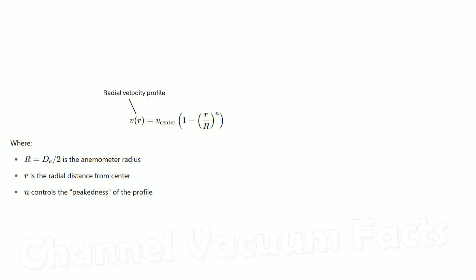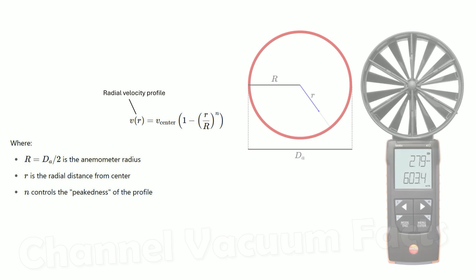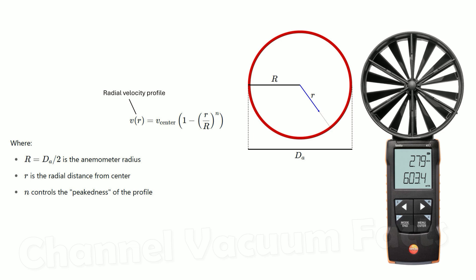The radial velocity profile in ducts and open-channel flows is typically described by a power law. This describes how the velocity drops off as you move away from the center of this measurement setup where it's the highest. The exact profile would need to be calculated either by solving the Navier-Stokes equation or using a computational fluid dynamics model, which is obviously impractical for the purpose of this video.